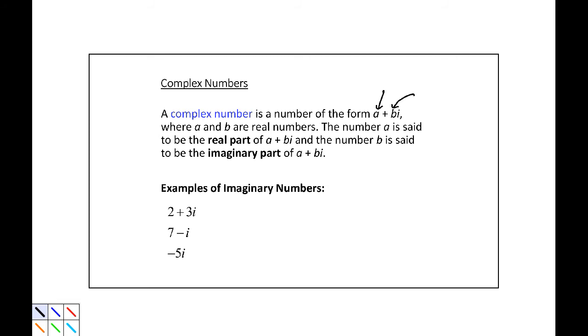In this case, 2 is the real part and 3 is the imaginary part. Here, 7 is the real part and negative 1 is the imaginary part. In this one, we actually have 0 being the real part: 0 minus 5i, with negative 5 being the imaginary part. Let's look at a few more roots that are going to be complex rather than just imaginary.